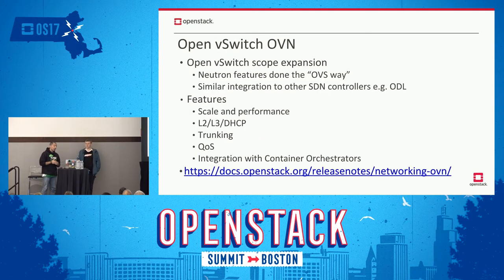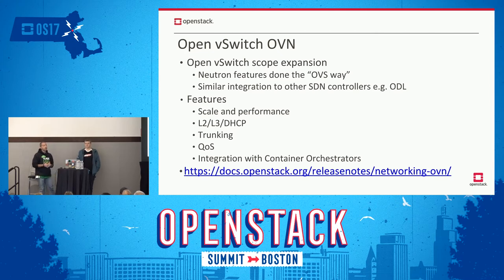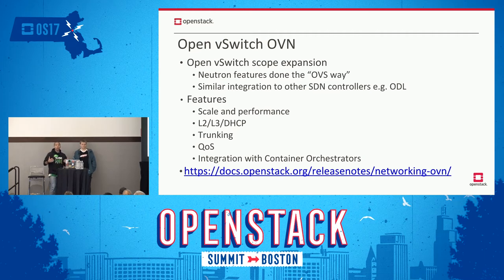OVN is something that started not too long ago. This is effectively a scope creep of the OpenVSwitch community. As the Neutron project, we provided OVS as one of the backends for the API alongside Linux bridge, using a Python-based agent architecture where we were talking to the OpenVSwitch daemons in order to provide virtual networking. Over time, the OpenVSwitch community came to the realization that OpenVSwitch would grow in scope and provide some of those abstractions and building blocks within itself. That is what OVN is about.